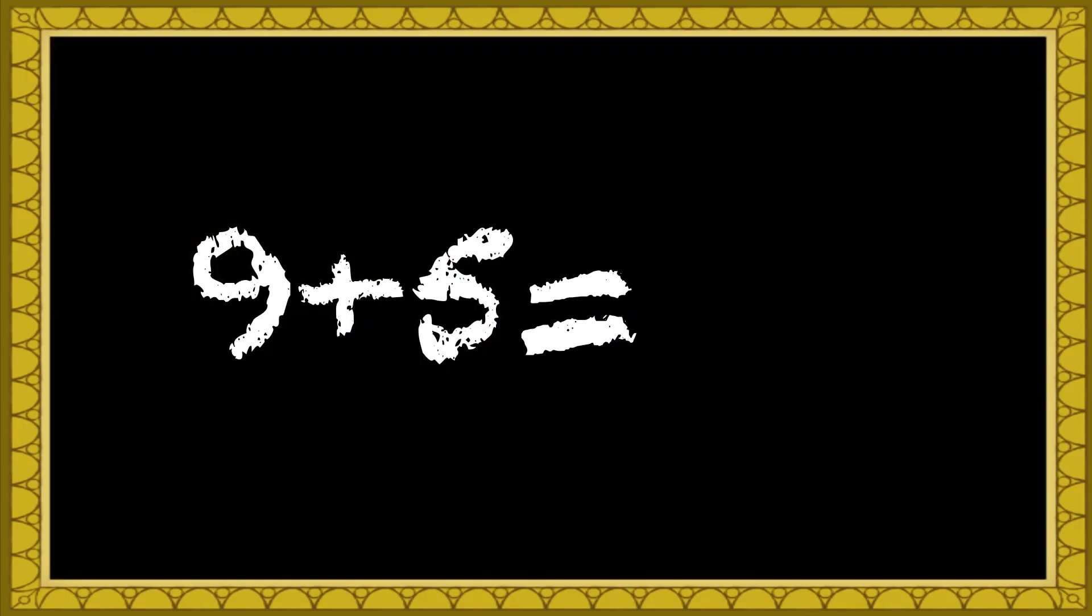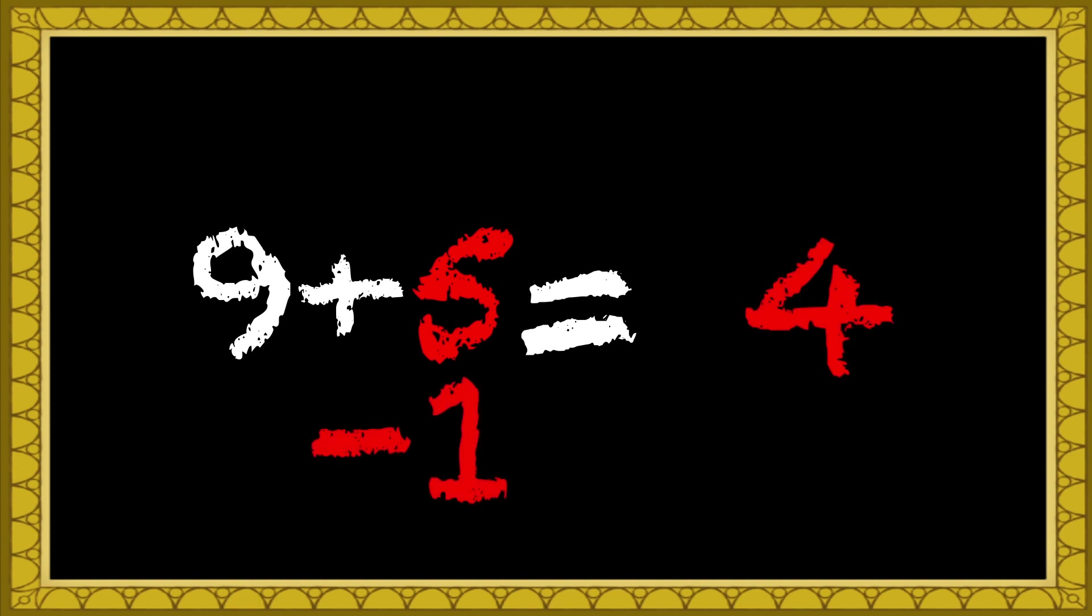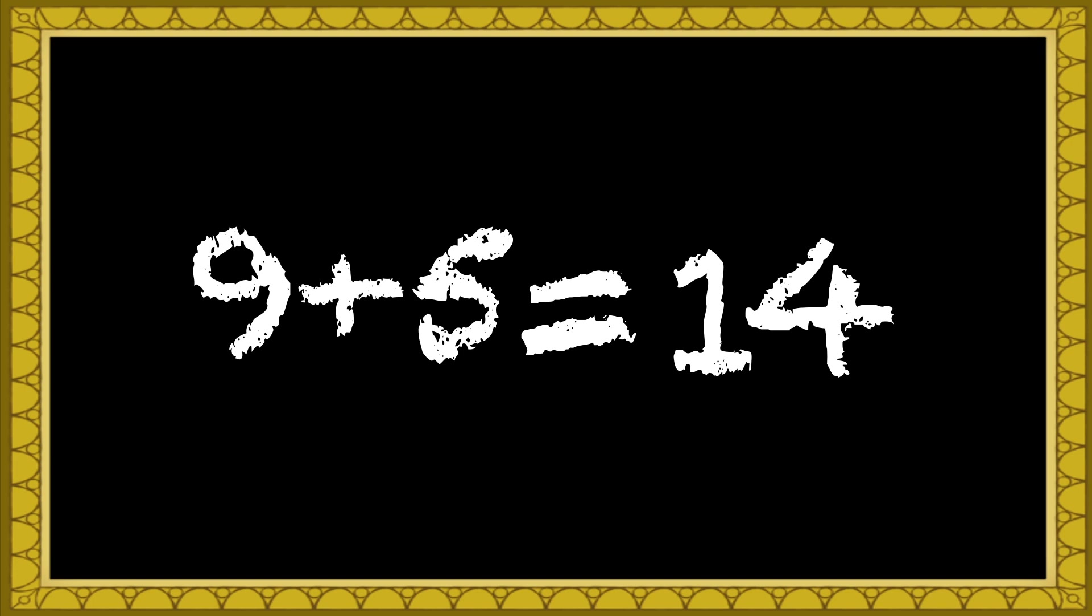So whenever you're adding two single digit numbers, and one of the numbers is nine, it's like this. Nine plus five. Take the number that's not the nine and subtract one. Then put it in your answer. Now all you have to do is put a one in front of that, and you got your final answer. In this case, it's fourteen.